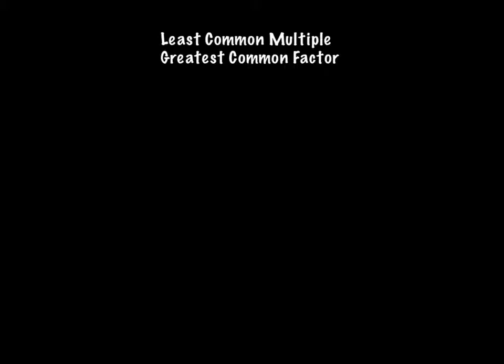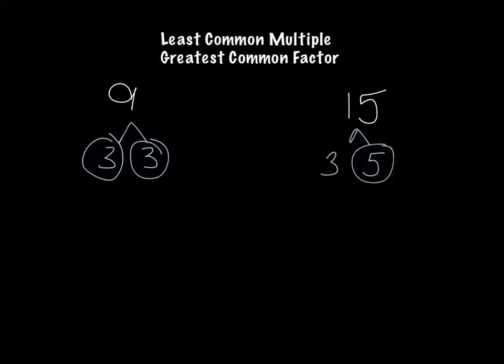For now we're going to look at the numbers nine and fifteen. The first thing we always do is make our factor tree for the number nine with only prime numbers. Nine is a perfect square, so we'll end up with just two prime numbers. I'm done with number nine, now I can move on to the number fifteen. Three and five go into the number fifteen, so I'm done.